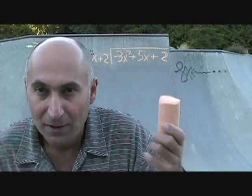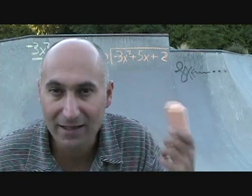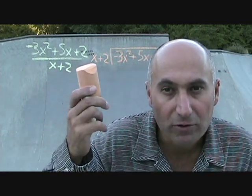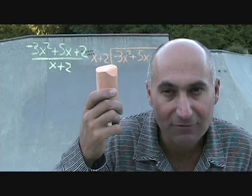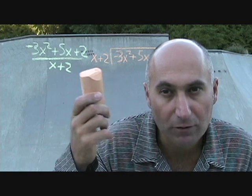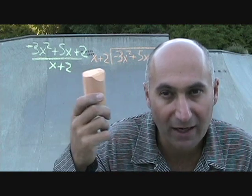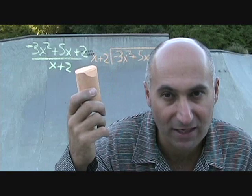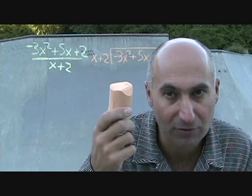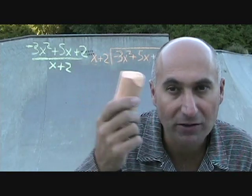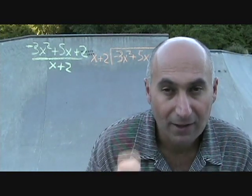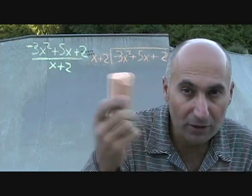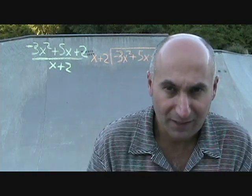Let's do the long division. What we're going to ask ourselves is: what do we multiply x by to give us negative 3x squared? We're going to multiply x by negative 3x, because negative 3x times x gives us negative 3x squared. Then we'll see what the rest looks like.